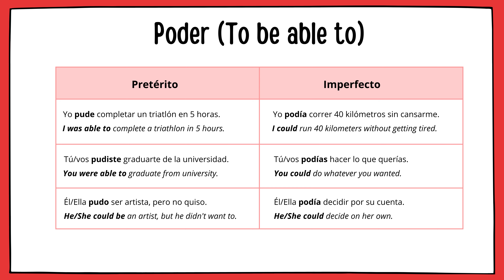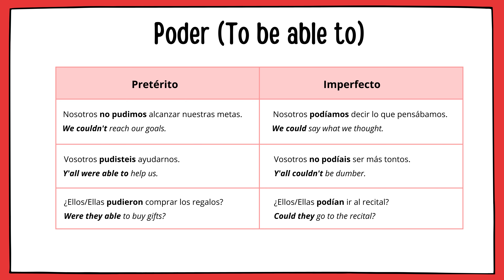Nosotros vimos al monstruo del lago Ness. Vosotros veis lo que quiero decir, no. Ellos ven lo que quieren ver. Nosotros no veíamos la hora de que termine. Vosotros no veíais nada sin anteojos. Ellos veían mejor de lo que crees. Next verb is poder, meaning 'can' or 'to be able to.' Yo pude completar un triatlón en cinco horas. Tú pudiste graduarte de la universidad. Él pudo ser artista pero no quiso. Yo podía correr 40 kilómetros sin cansarme. Tú podías hacer lo que querías. Él podía decidir por su cuenta.